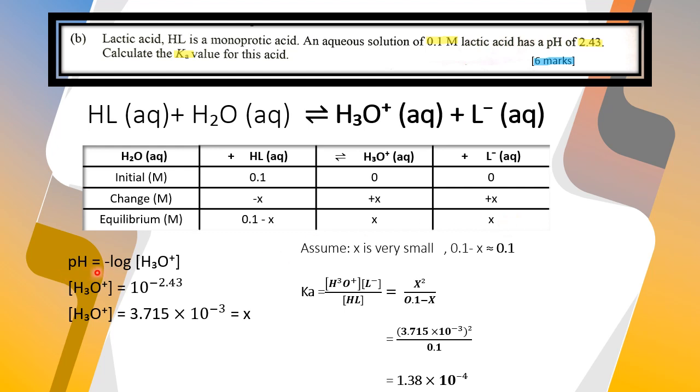Use the formula pH equals negative log concentration of hydronium ion. We put the value of pH that is given to find the concentration of hydronium ion. So we get the concentration of hydronium ion is 3.715 times 10 to the power of negative 3, which equals x.